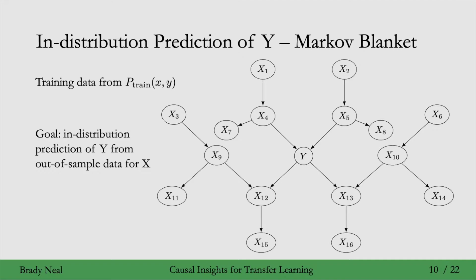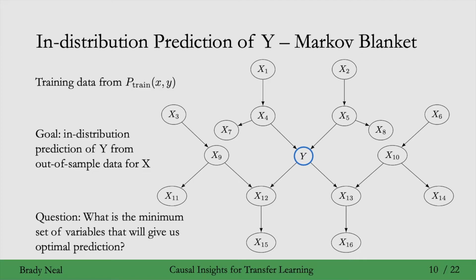Out-of-sample means unseen in the sense that we train on the in-sample data — we call that in-sample — and then out-of-sample means any other data from that same distribution. So in this graph, y is the variable we're interested in predicting, and the question is: what is the minimum set of variables that will give us optimal prediction? We have all of these x nodes, and we could just use all of them to predict y. That will give us all of the information about y present in our data. But we don't actually need to use all of those — the question is which minimal set of nodes can we use that will encompass all of the information about y? I encourage you to think about this yourself.